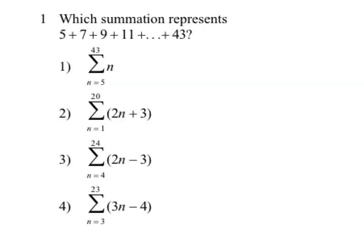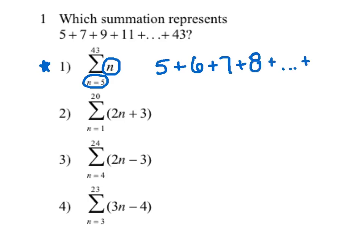Here's a great example of what a Regents question will look like regarding series and sigma notation. Because it's multiple choice, I'm going to take a slightly different strategy. Starting with number one, the lowest number is five, so I substitute five into the nth term expression — it simply gives five. Going up in increments of one: next is six, then seven, then eight, and so on up to 43. That doesn't match what was given, since the series has sixes and eights, so I'm going to eliminate number one.